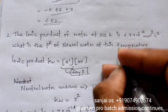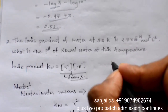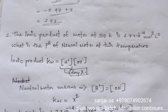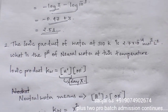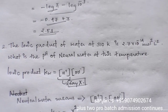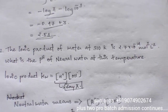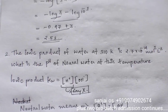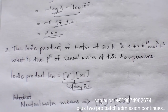What is the pH of neutral water at this temperature? The ionic product of water at 310 Kelvin is 2.7 into 10 raised to minus 14 mole square per litre.